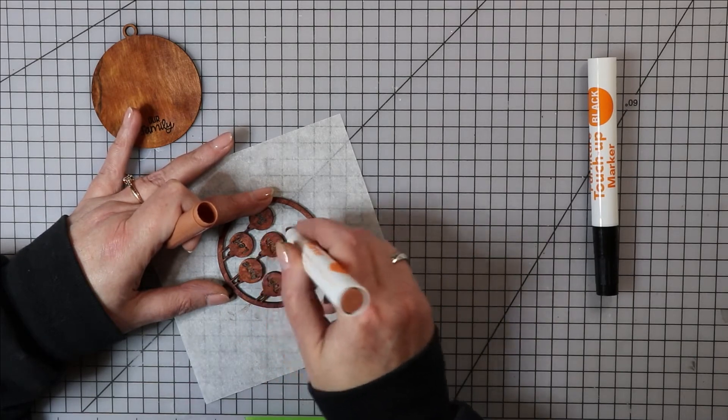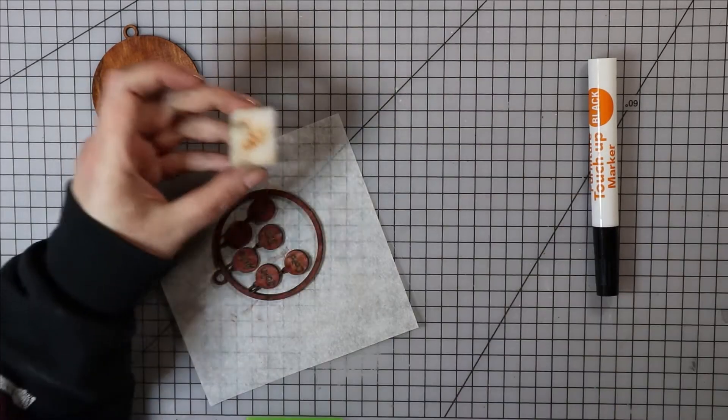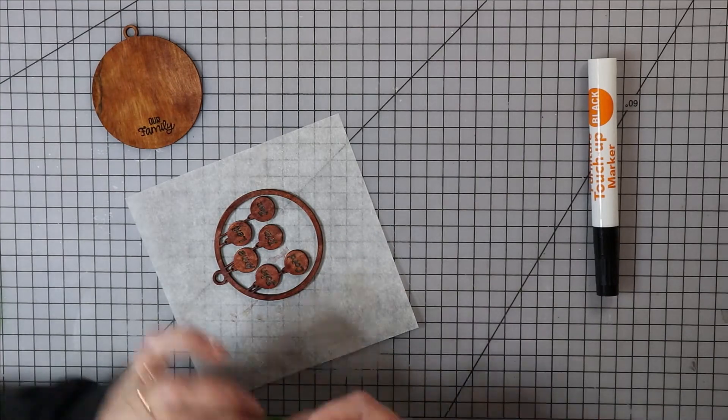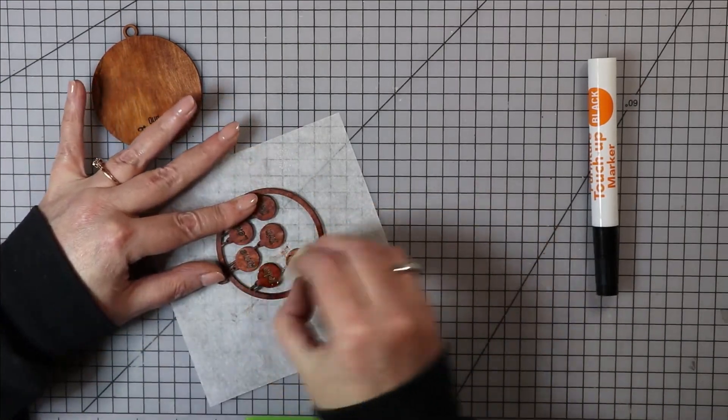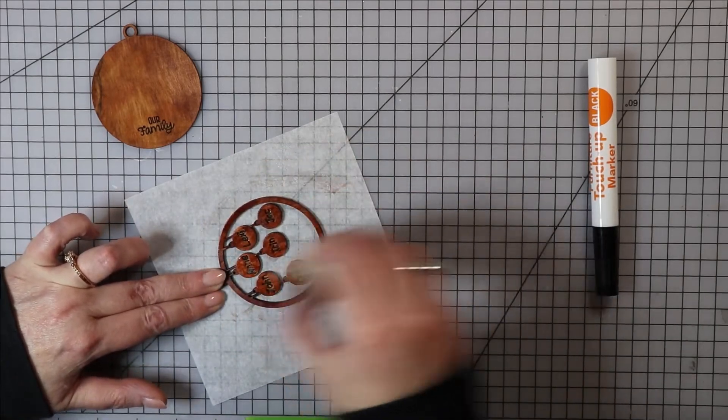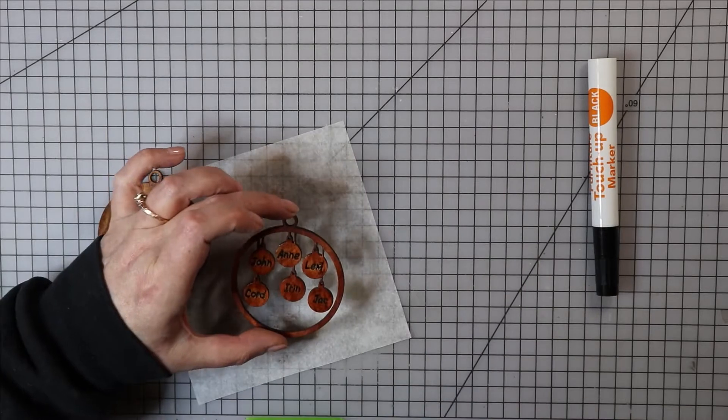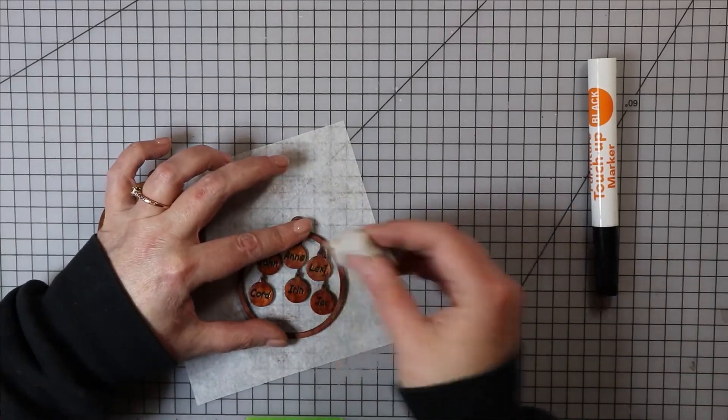A trick if you are using markers to color in or stain your project is to spray it with a little alcohol if you're using Sharpie afterwards. This encourages that ink to bleed and erases any marker lines that you get. If you're using a water-based marker like a Crayola, go ahead and dab a little bit of water on it and it'll do the same thing.